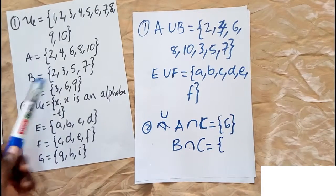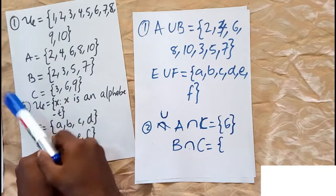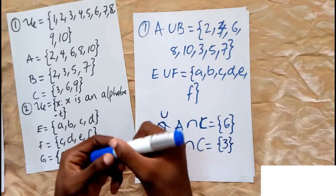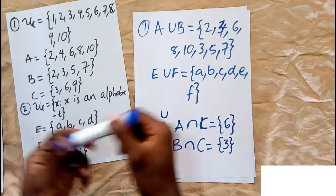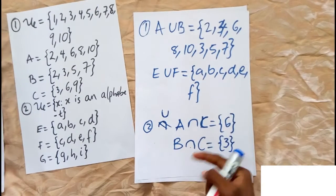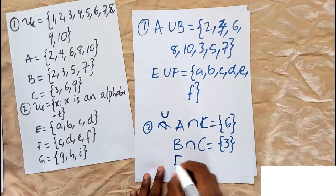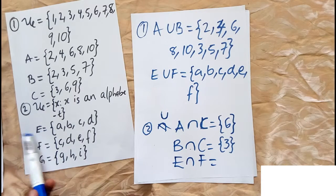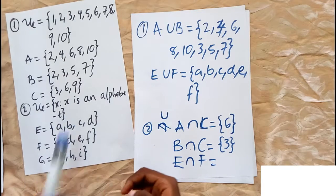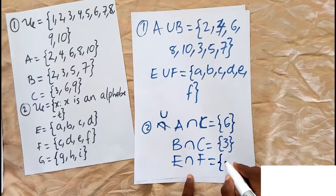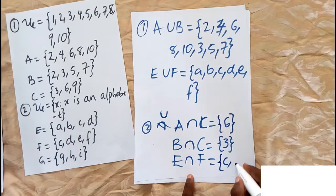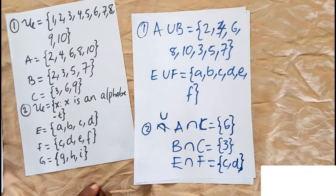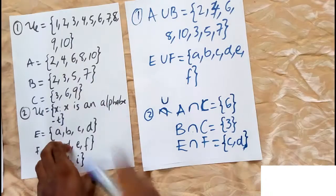Then we have B intersect C. Check elements in B against C: 2 is not in C, 3 is in C — so 3 goes in. Then 5 is not in C, and 7 is not in C. So B intersection C = {3}. We can also do E intersection F: checking each element, we find C is in both E and F, and D is in both — so E intersection F = {C, D}.